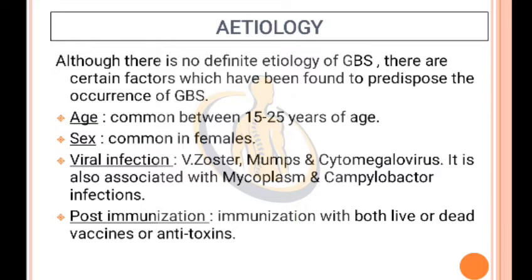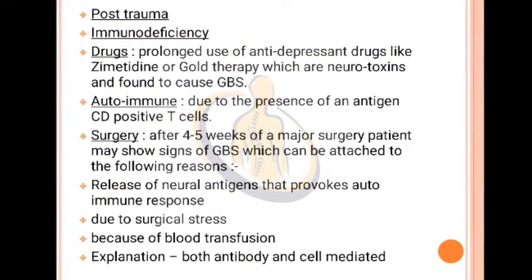Post-immunization: immunization with both live or dead vaccines or antitoxins. Post-trauma, immunodeficiency, and drugs — prolonged use of antidepressant drugs like cimetidine or gold therapy, which are neurotoxins, can cause GBS. Autoimmune: due to the presence of an antigen and CD-positive T-cells. Surgery: after four to five weeks of a major surgery, patient may show signs of GBS due to release of neural antigens that provoke an autoimmune response from surgical stress or blood transfusion.